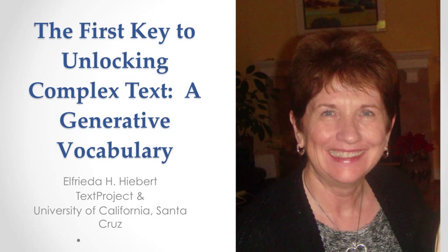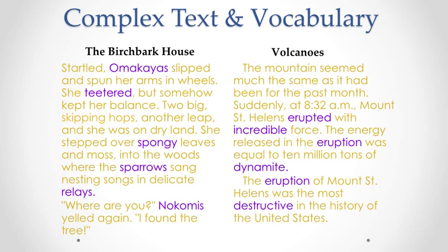Vocabulary is the most obvious aspect of complex text to readers. The purple words in these texts are ones that are fairly rare. Vocabulary is also a feature of text that's closely associated with comprehension. In fact, the correlation between vocabulary and comprehension is almost perfect. The good news is that this very influential and visible aspect of complex text is also highly teachable.